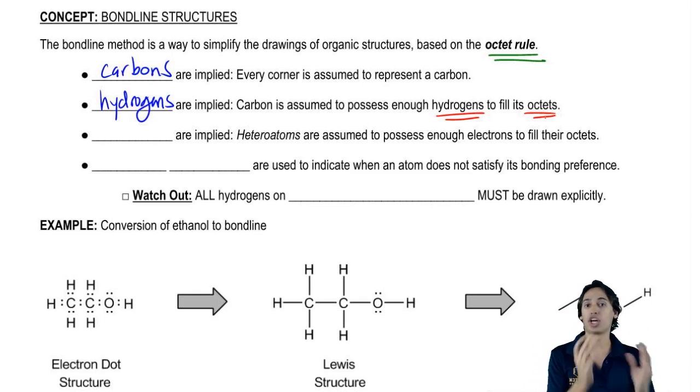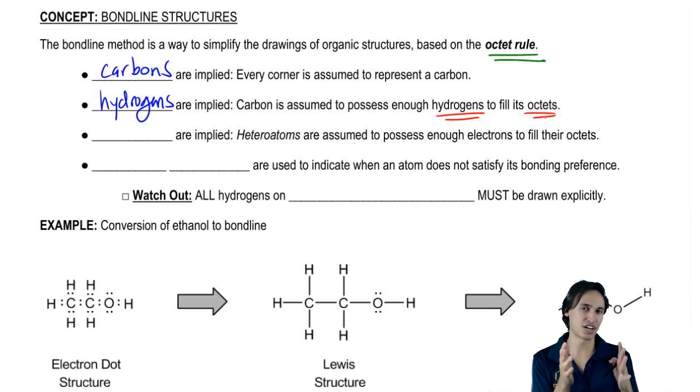Think about it this way. Carbon wants to have how many electrons in its octet? Eight. If it only has two bonds to carbon, that means that there must be two bonds to hydrogen. That's the way we think. We kind of do a little bit of mental subtraction and that's the number of hydrogens that are going to be implied on that structure.